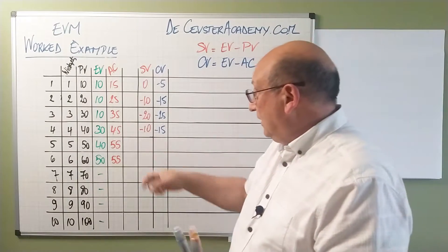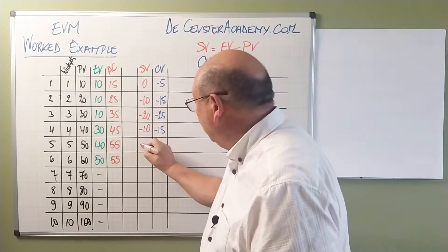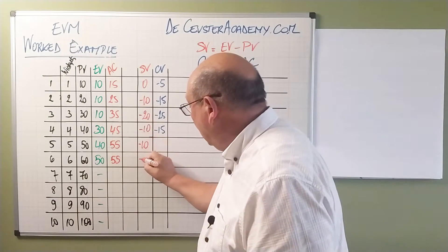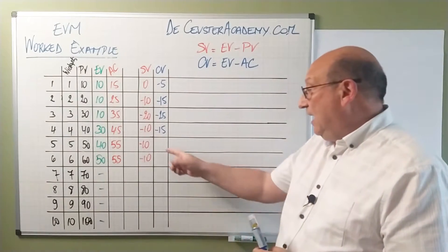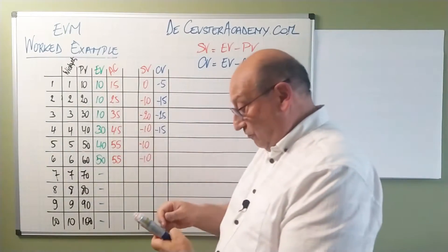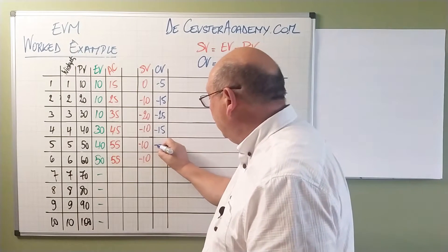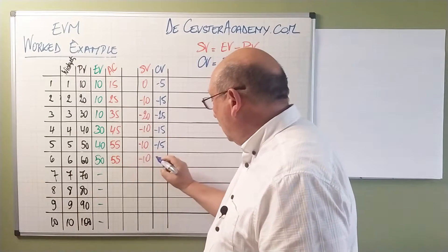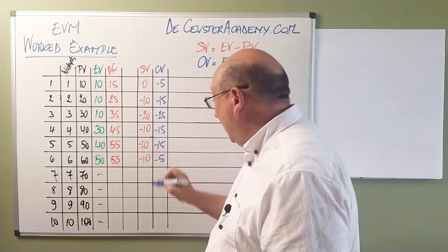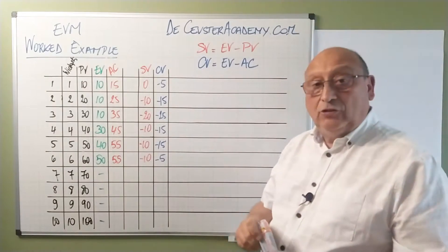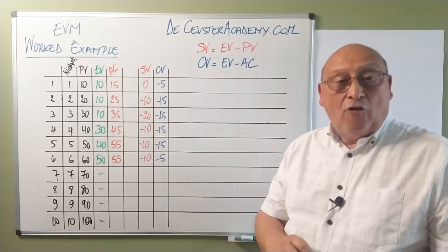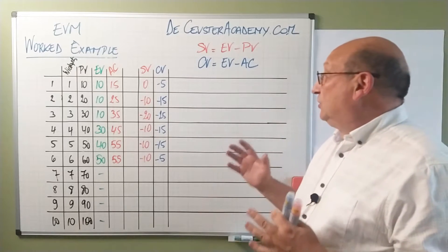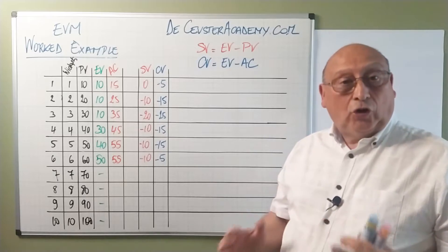Here we again have minus 10, so that stays the same. And here I have a cost variance of minus 15 and a cost variance of minus 5. So this is the overview of all those parameters for the schedule variance and the cost variance.